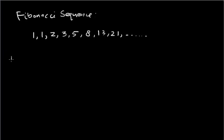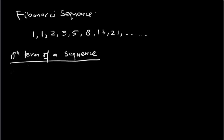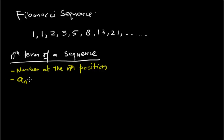The next topic is the nth term of a sequence. The nth term is the value at the nth position, and we denote the nth term by aₙ. Suppose we have the sequence one, three, five, seven, nine, and so on.